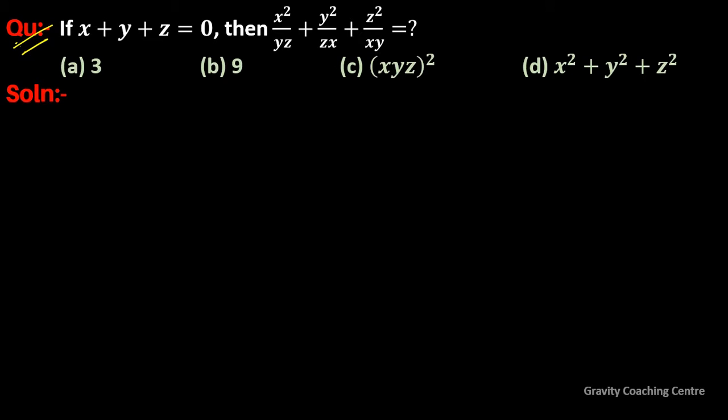Question: If x plus y plus z equals 0, then x squared upon yz plus y squared upon zx plus z squared upon xy equals what?